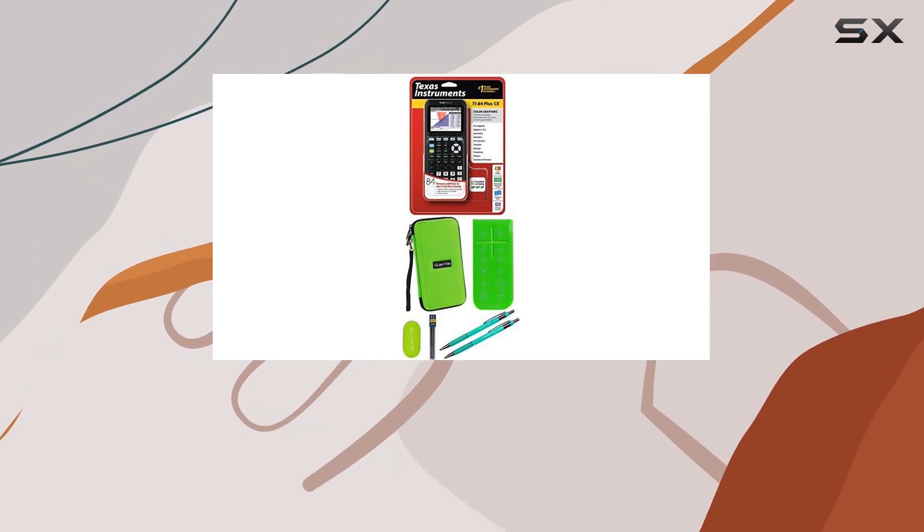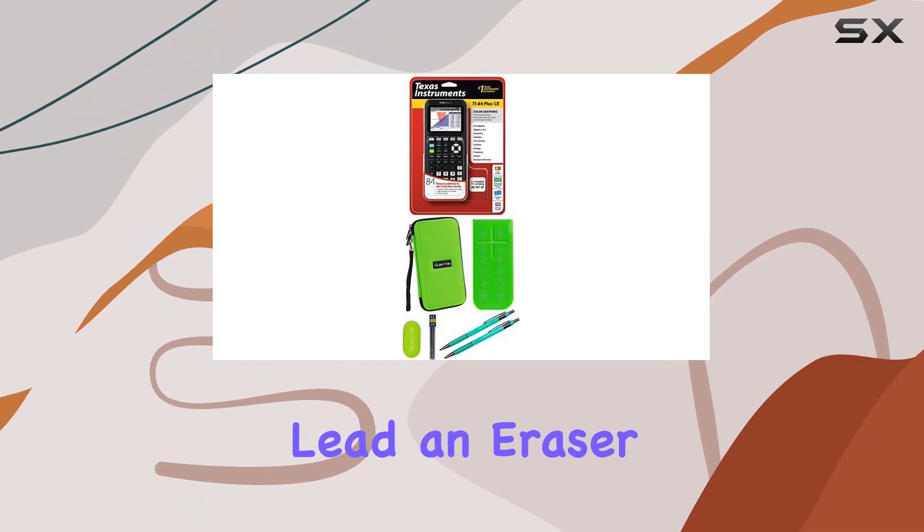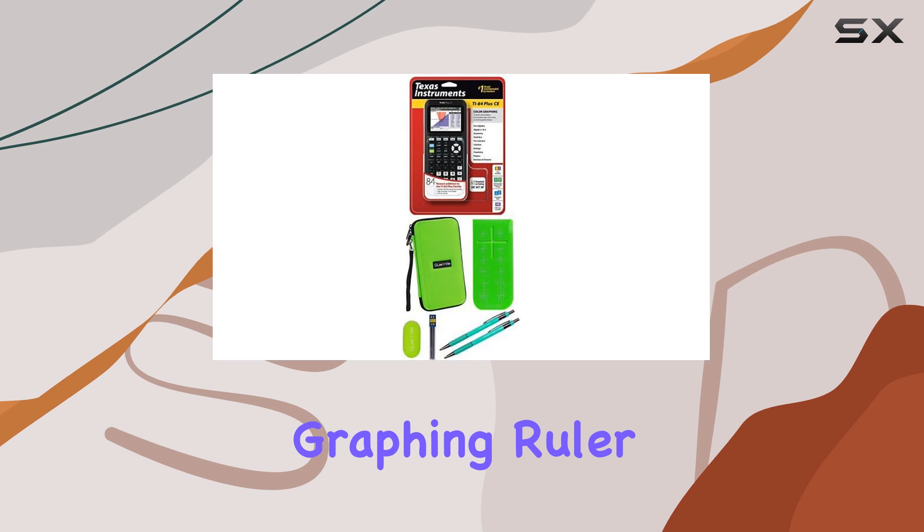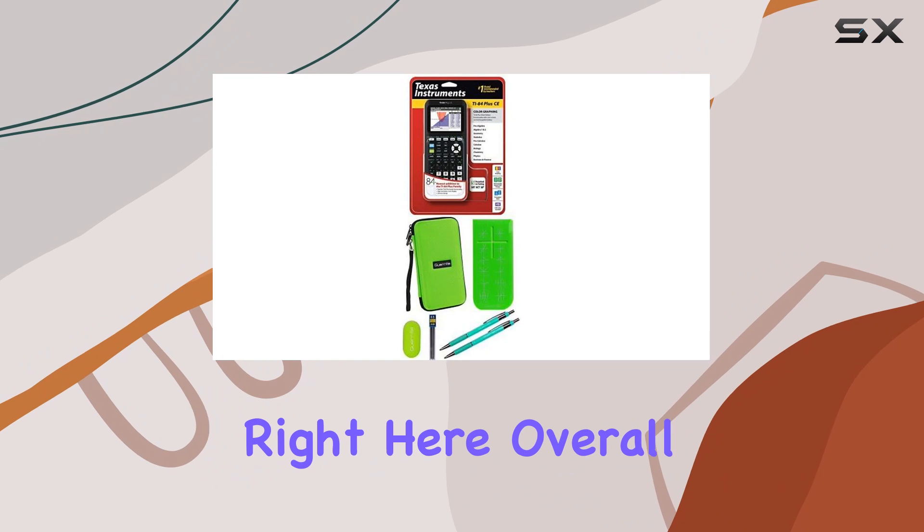And the Gorilla Essential Calculator Accessory Kit? It's got you covered with two mechanical pencils, extra lead, an eraser, and a handy graphing ruler. No more scrambling for supplies in the middle of a test. Everything you need is right here.